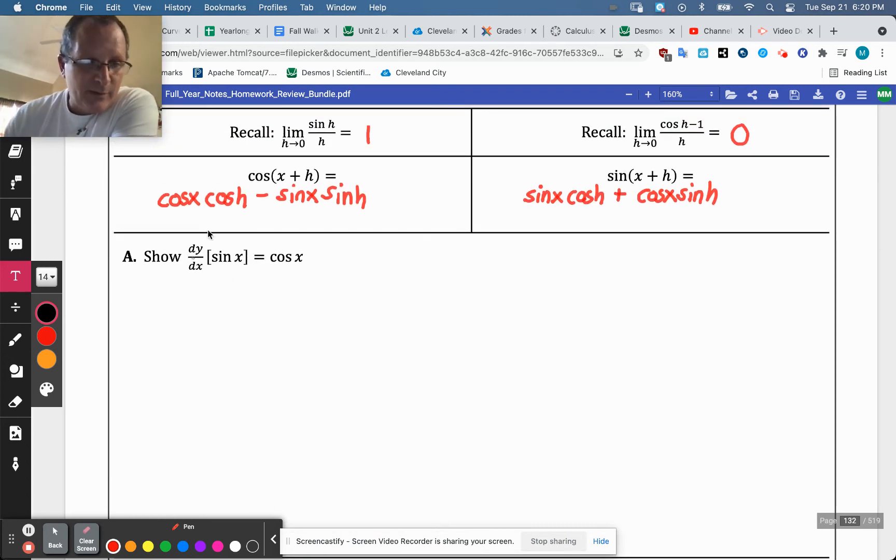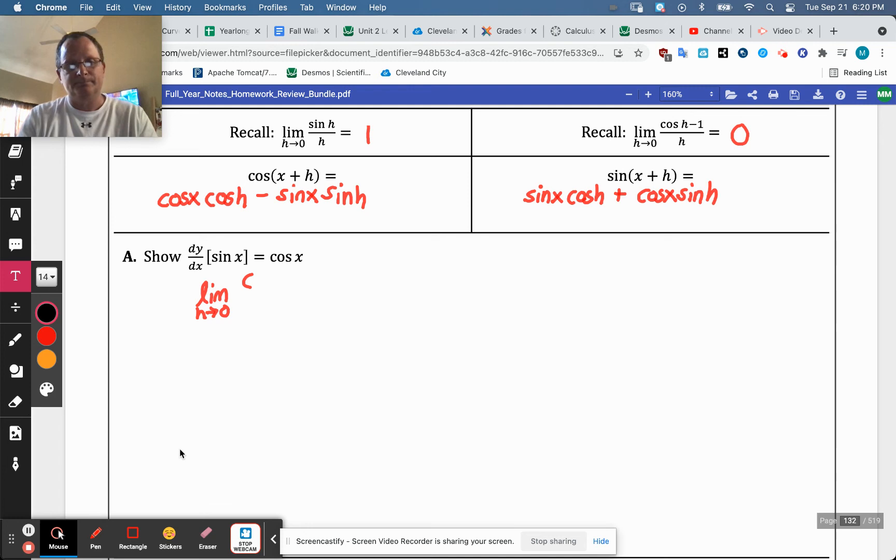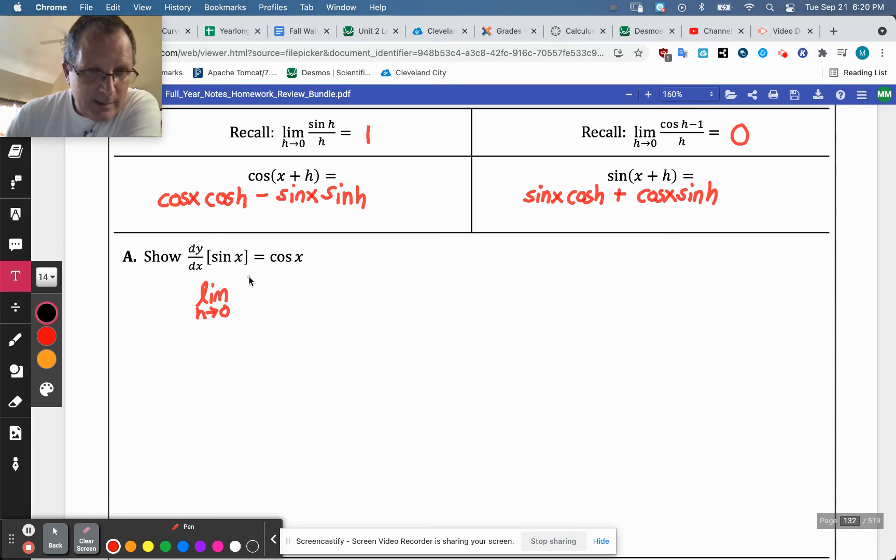All right, so here we go. So this derivative, the derivative of y with respect to x of sine x, is going to be the limit. And we're doing the h one, right? We're doing the regular limit definition, not the alternate. The limit as h approaches zero. All right, here's y two. Already messed up. We're doing the sine one first. We're doing this one over here first. So it will be the sine of x plus h minus the sine of x, divided by h. So that's y two minus y one, and then x two minus x one is just going to be h.